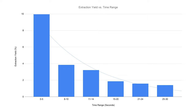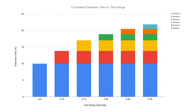If I stack that same data, here's a look at how much of the puck is dissolving into the cup compounded from the start of the shot through the end of each five-second increment. You'll see the bars get smaller and smaller as the shot progresses. This is partially because there are fewer solids remaining in the puck to dissolve, but also because the ones that are left are harder to extract.